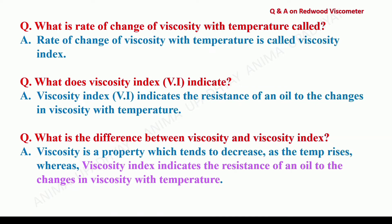What is the rate of change of viscosity with temperature called? The rate of change of viscosity with temperature is called viscosity index. What does viscosity index indicate and how is it abbreviated? Viscosity index indicates the resistance of an oil to the changes in viscosity with temperature, and it is abbreviated as VI, both in capitals. What is the difference between viscosity and viscosity index? Viscosity is a property which tends to decrease as the temperature rises, whereas viscosity index indicates the resistance of an oil to the changes in viscosity with temperature.